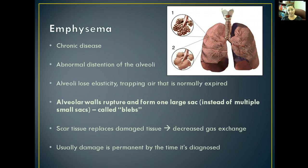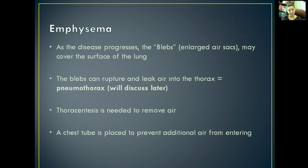Scar tissue replaces the damaged tissue, further decreasing gas exchange because the tissue is much thicker. Usually the damage is permanent by the time it's even diagnosed, which is why it's so frustrating — we often don't know the patient is going through this until it's irreversible. As the disease progresses, those blebs can cover the entire surface of the lung. The blebs can rupture and leak air into the thorax, and the patient will develop a pneumothorax.